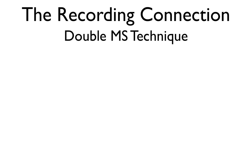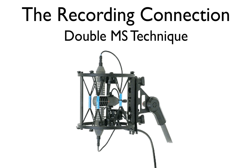The double MS technique is an improved version of the well-known MS technique for recording stereo. In addition to a front-facing cardioid and figure-eight side microphone, a rear-facing directional microphone is used in this setup. The front and rear microphones share the signal of the figure-eight microphone to form two complete back-to-back MS systems. One MS system provides the three front channels, while the other provides the two surround channels. This arrangement allows flexible processing of the stereo sound image width and post-production adjustment for both MS pairs.